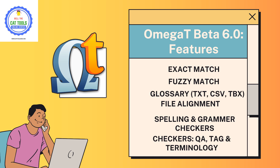There is also a separate glossary window where your glossary terms present in the current segment are displayed. OmegaT supports TXT, CSV, and TBX formats. TBX is the Term Base Exchange format, the universal format for interchange of term bases. Please do not confuse TMX and TBX: TMX is the Translation Memory Exchange format, whereas TBX is the term base — a terminology database or glossary — converted to TBX format for use in various terminology tools.